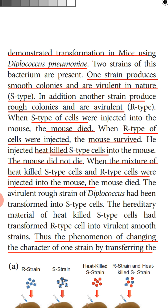In the experiment: first, S-type cells were injected into the mouse — the mouse died, as S-type is virulent. Second, R-type cells were injected — the mouse survived, as R-type is avirulent. Third, heat-killed S-type cells were injected into the mouse — the mouse did not die.